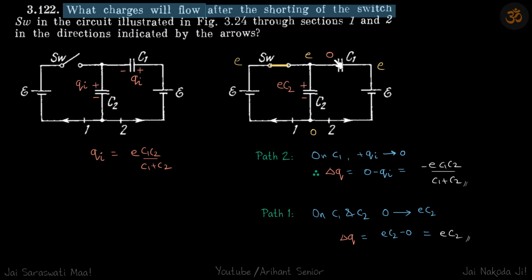Across this capacitor, electric potential is e, the charge is going to be e c2, and the plus sign corresponding to the positive side of the battery. And here also, the plus sign was on the positive side of the battery.